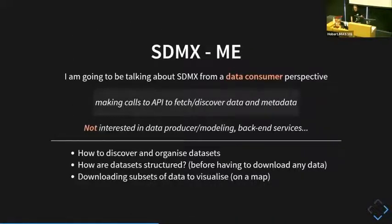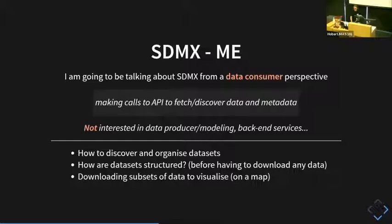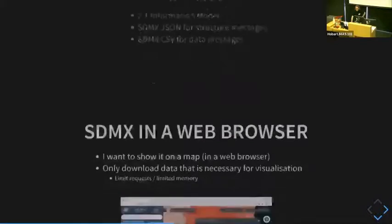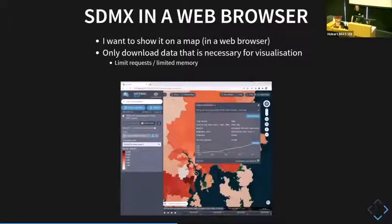I'm going to be talking about SDMX from a data consumer perspective — someone making calls to an API to get data, not really the data producer or data modeling side. There are three main points for me: how to discover and organize data sets, how data sets are structured — ideally before having to download any data — and finally downloading subsets of the data to visualize on a map. The two sources are the Australian Bureau of Statistics API and the Pacific Data Hub, and I want this all working in a web browser, so there are limitations around how much data you can download and limiting requests to a server.